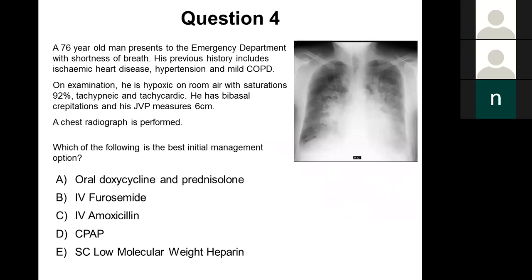Question four: a 76-year-old man presents with shortness of breath. His previous history includes ischemic heart disease, hypertension, and mild COPD. On examination, he is hypoxic with saturations of 92%, tachycardic and tachypneic. He has bibasal crepitations and his JVP measures six centimetres. A chest radiograph is performed. Which is the best initial management? Is it A oral doxycycline and prednisolone, B IV furosemide, C IV amoxicillin, D CPAP, or E subcutaneous low molecular weight heparin?